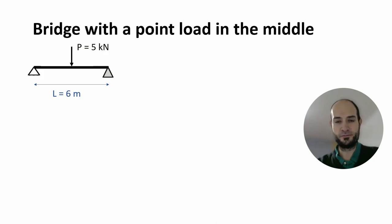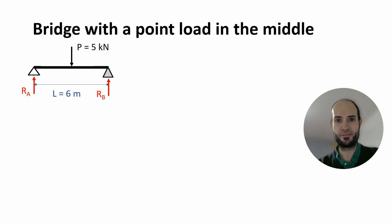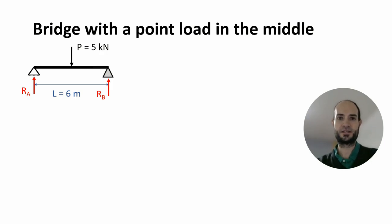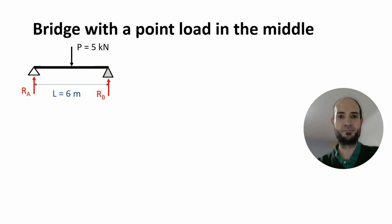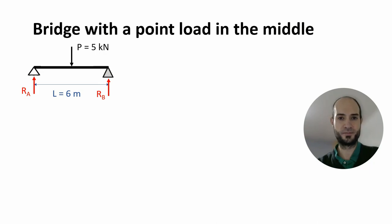Since we have two pin supports, we will have two reactions, Ra and Rb. As you know from previous videos, we will also have two horizontal reactions on the supports, but since we don't have any horizontal loads, we don't bother.